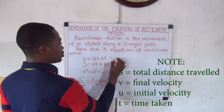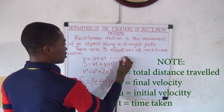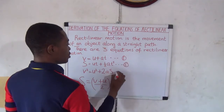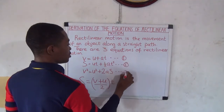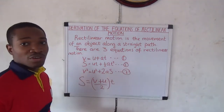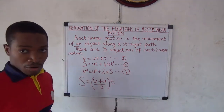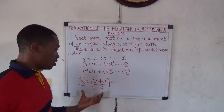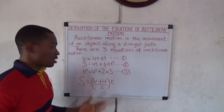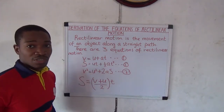So this is equation 1, this is equation 2, and this is equation 3 — the third equation of rectilinear motion. This auxiliary equation is normally used in line with all of them.